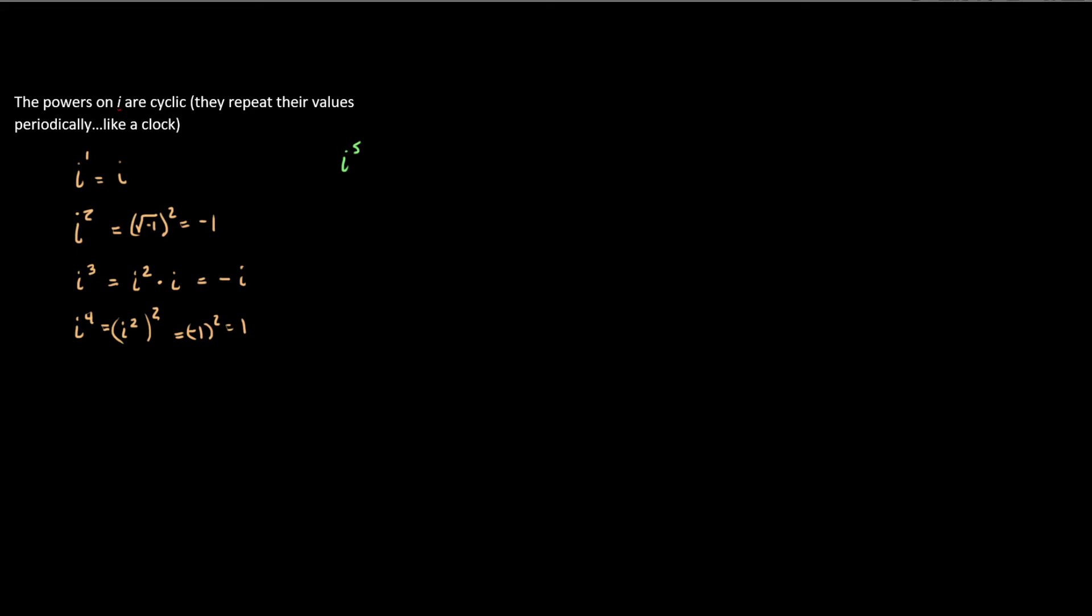i to the fifth can be thought of as i to the fourth times i. Well, i to the fourth was just 1, so it's 1 times i, or just i. i to the sixth is i to the fourth times i squared. i squared is negative 1 times 1 is negative 1. i to the seventh equals i to the fourth times i cubed, which is just 1 times i cubed, and i cubed was negative i. And then finally, i to the eighth is equal to i to the fourth squared, which is just 1 squared, which is just 1.